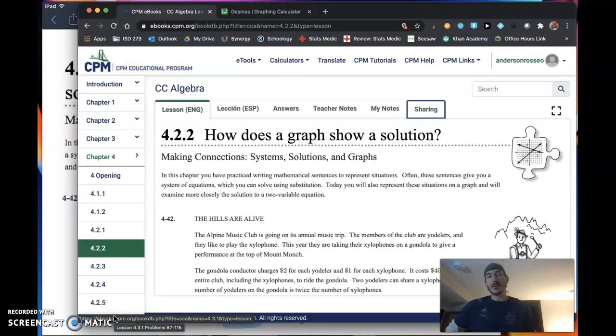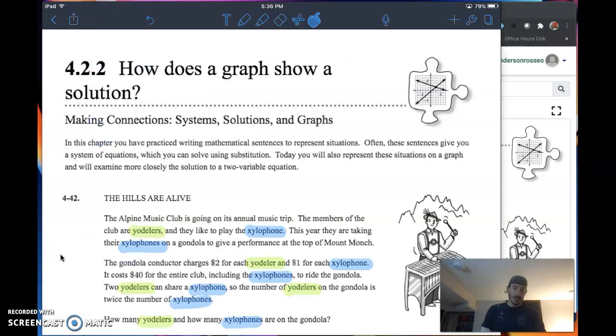Hey everyone, it's Mr. Anderson. Today we're going to talk about section 4.2.2 from our CPM Common Core Algebra book. We're going to attempt to make the connection between a solution to a system and graphing.